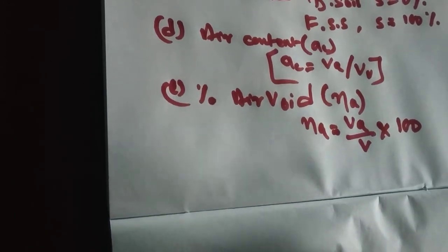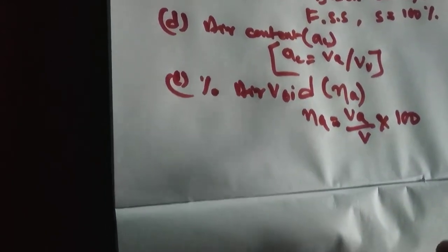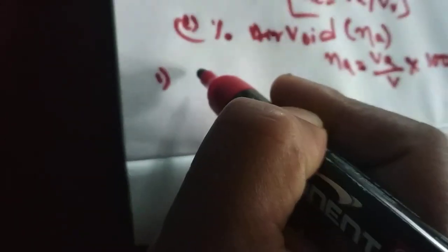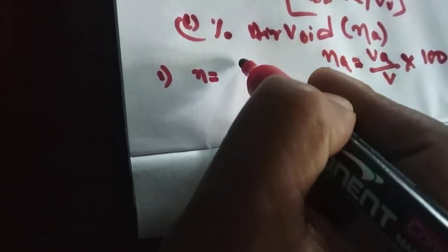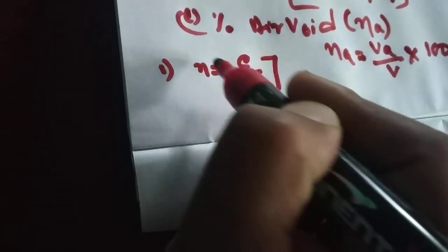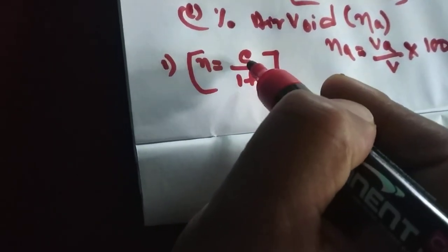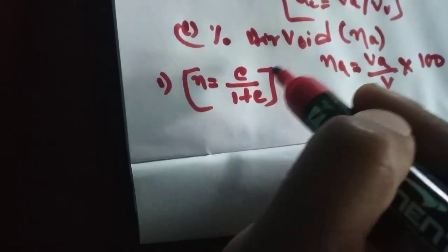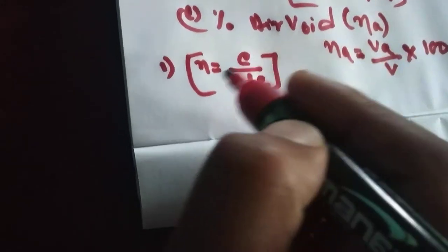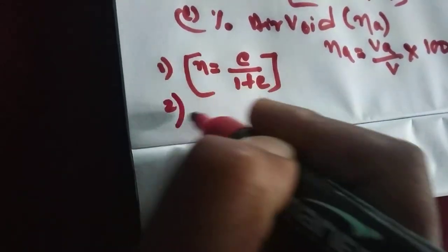You can relate void ratio and porosity by this formula - note it down: porosity N equals E divided by 1 plus E, and void ratio E equals porosity N divided by 1 minus N.